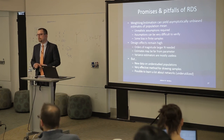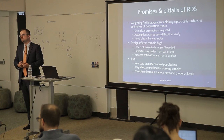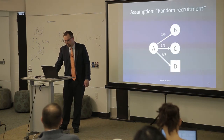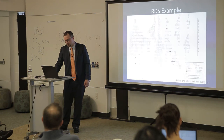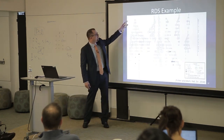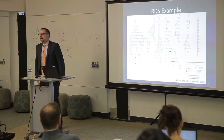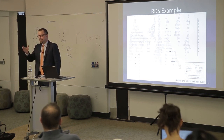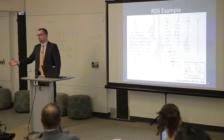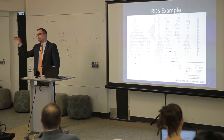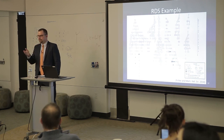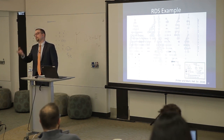Regarding whether to drop seeds in analysis: one common recommendation in RDS is to drop that first wave of seeds because they're biased. But from a statistical perspective there's no reason to do that. The theory is that it starts in a biased place and eventually ends up in a less biased place, but from a random walk mathematics perspective it takes a long time to get to that less biased place, so I don't think it's a good justification for dropping them. Some estimators do require dropping seeds because they use who recruited whom and seeds didn't get recruited by anyone, so in those specific estimators you'd want to drop them.